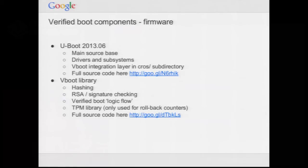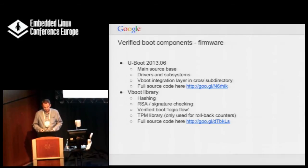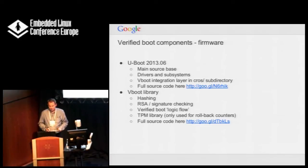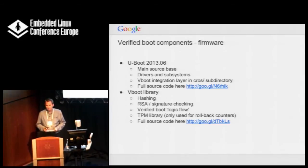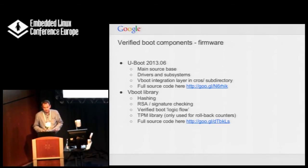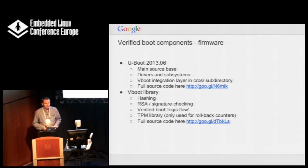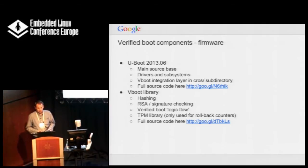Here are the components of firmware, particularly talking about Snow, the ARM laptop. We have U-Boot 2013.06. We're very close to upstream in Chrome OS. There's a vBoot integration layer which connects to what I call the vBoot library — the source code for that is all there. The vBoot library was originally written three years ago to work with UEFI. It includes hashing functions, RSA, and all sorts of things, much of which we've been able to upstream into U-Boot. U-Boot now has support for TPMs, RSA, hashing, and so on.